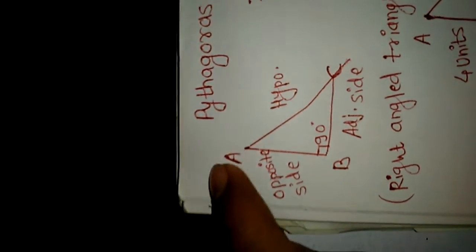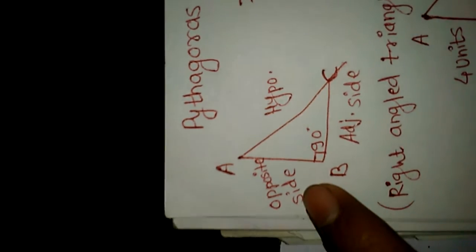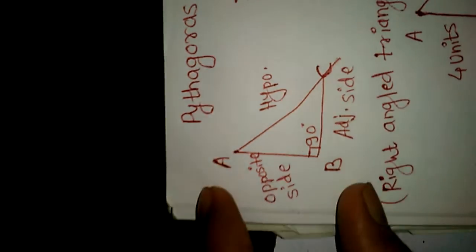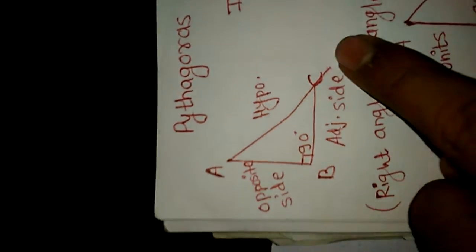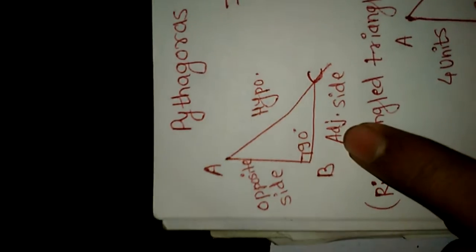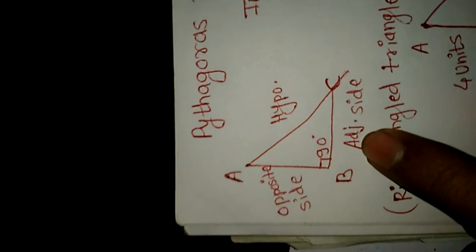We find that AC is the hypotenuse of the right-angle triangle. Hypotenuse means the longest side — the corner side. AB is the opposite side of the triangle, and BC is the adjacent side of the triangle.